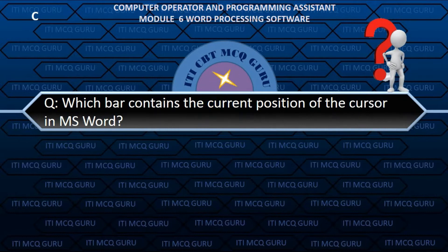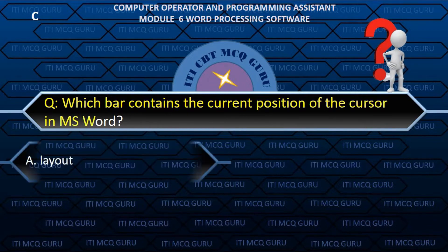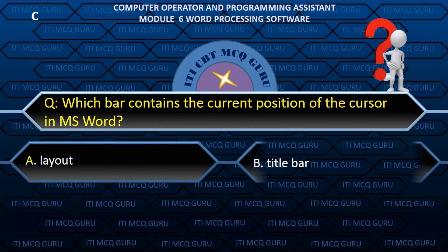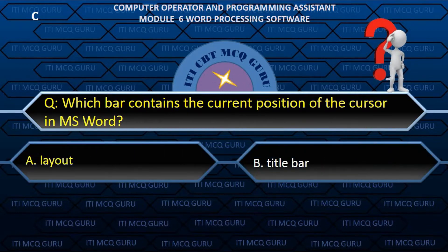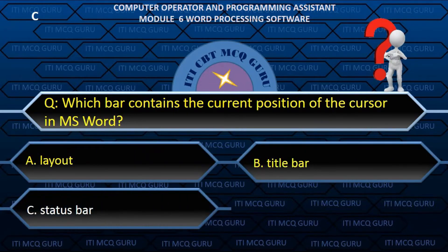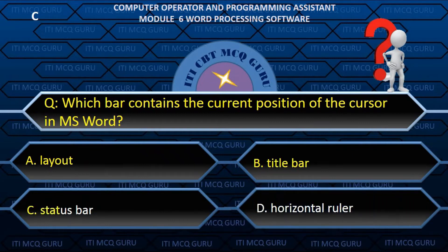Which bar contains the current position of the cursor in MS Word? C. Status bar.